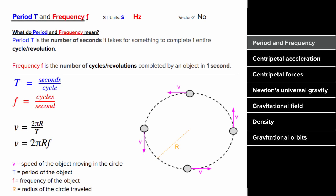What does period and frequency mean? The period is the number of seconds it takes for a process to complete an entire cycle, circle, or revolution. So if there's some repeating process, the time it takes that process to reset is the period, and it's measured in seconds.